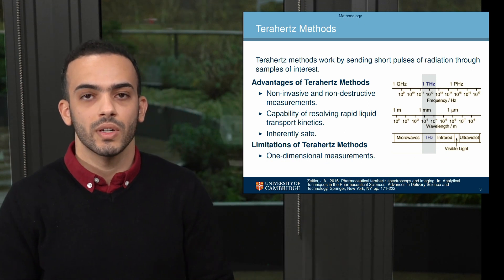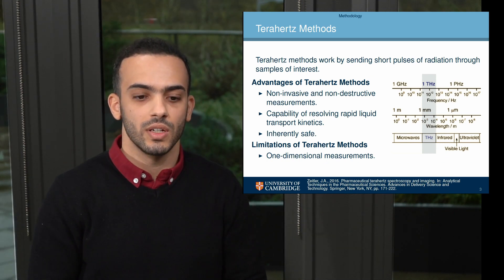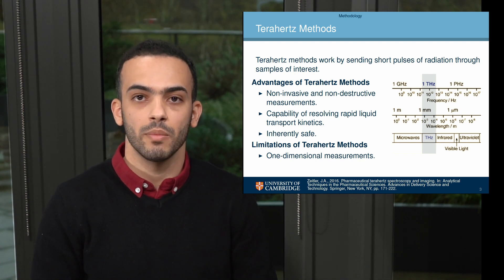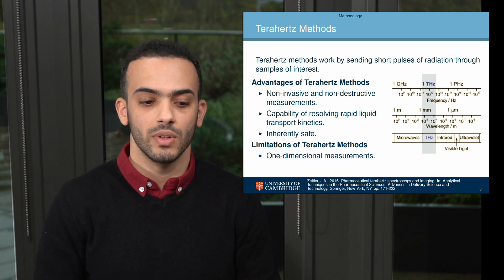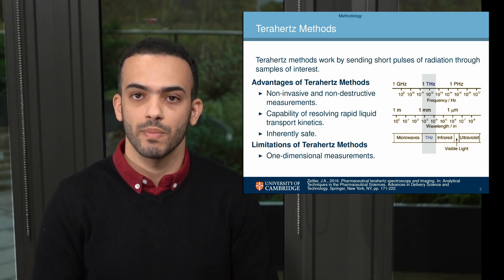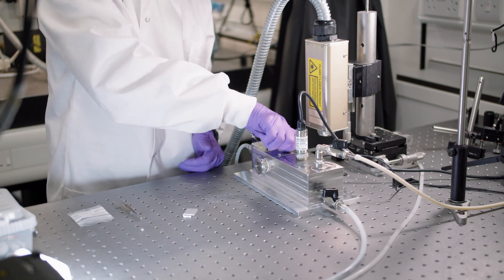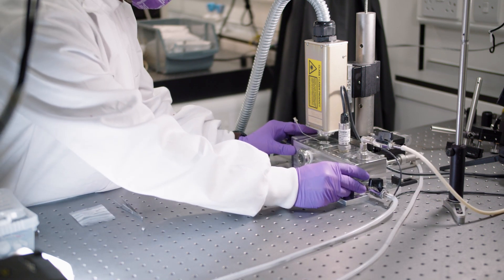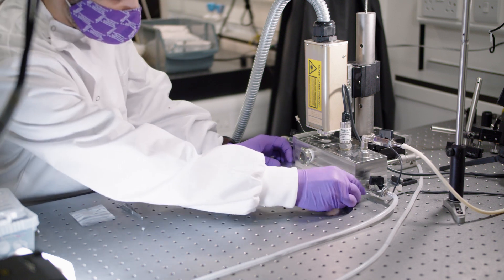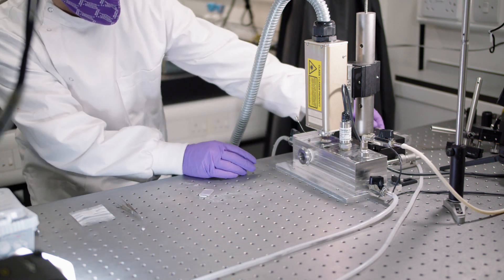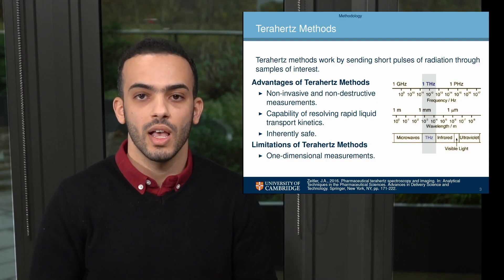The terahertz methods characterize the properties of materials using electromagnetic radiation in the frequency range between the infrared and microwaves on the electromagnetic spectrum. Short pulses of terahertz radiation are used for the terahertz experiments. There are a number of advantages of using such techniques, including the non-invasive and non-destructive nature of the measurements, the capability of resolving rapid liquid transport kinetics due to the high acquisition rate, and such techniques are inherently safe due to the low photon energy and low average power. However, the terahertz liquid transport measurements are one-dimensional measurements for the time being, whereas other techniques such as magnetic resonance imaging can provide information in more than one dimension.